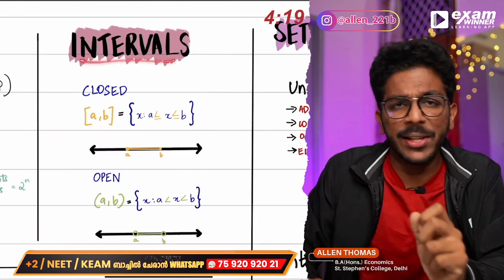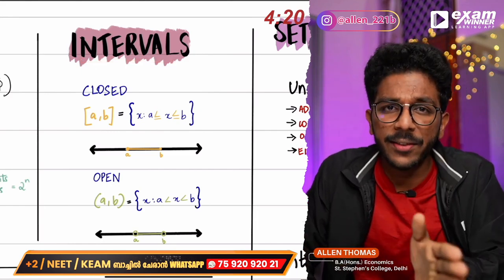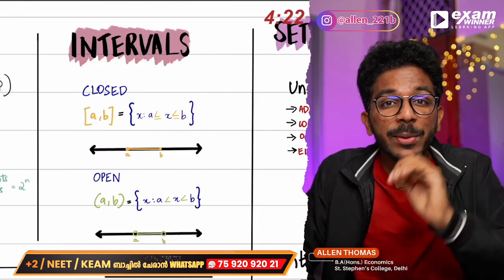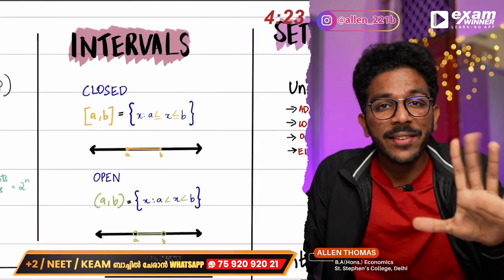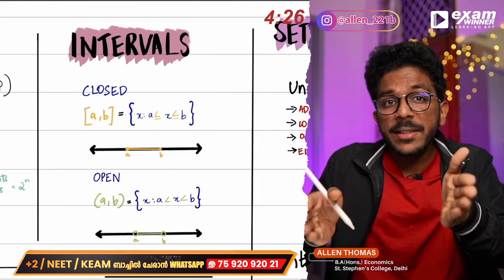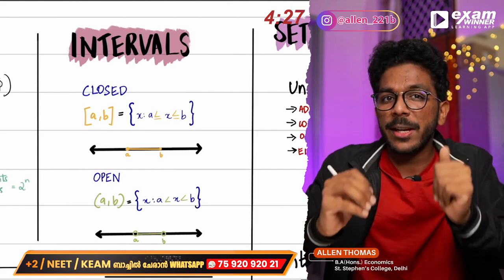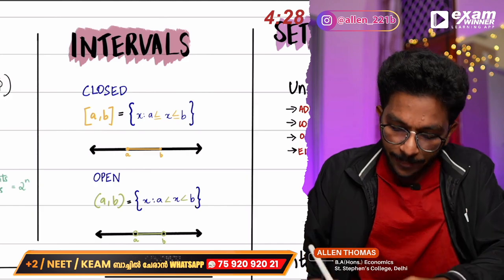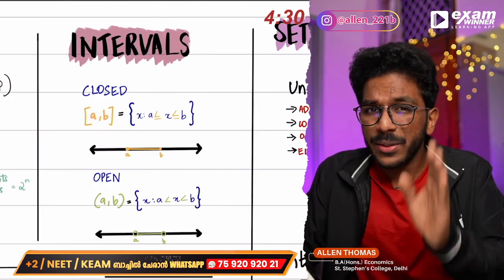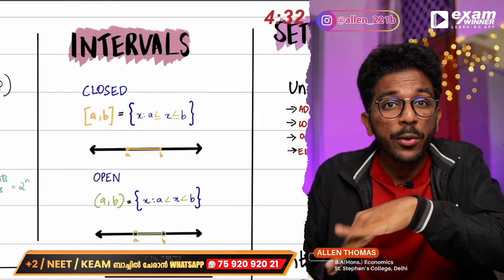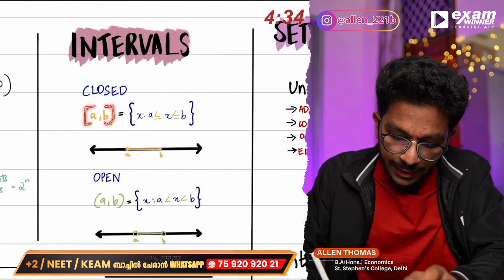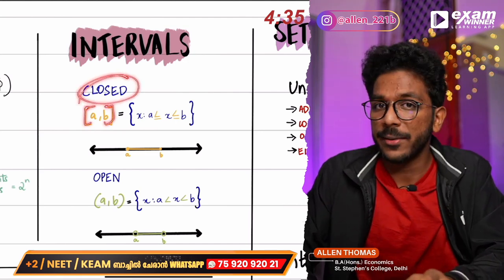Now we are going to intervals. Interval is basically about numbers. If we break up the interval between 2 and 3, we close it in square brackets — that means both endpoints are included.